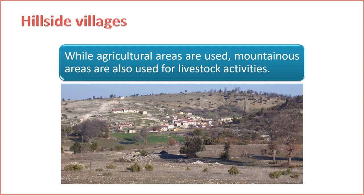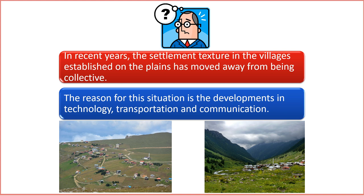Slope and valley villages are established on a mountain slope or in a valley. Their livelihood is primarily animal husbandry; they are less developed and have many infrastructure problems. Most villages in the Black Sea, Mediterranean, and Eastern Anatolia have this feature. In recent years, there has been a noticeable shift in settlement patterns of villages situated on plains, moving away from traditional collective arrangements. This transformation is primarily driven by advancements in technology, transportation, and communication. 1. Technological advancements. The adoption of modern agricultural practices and machinery has reduced the need for large labor forces, with mechanization allowing more efficient and independent farming, diminishing the necessity for close-knit collective settlements.